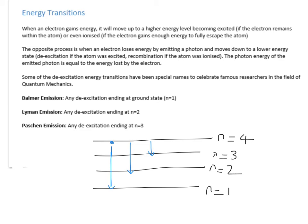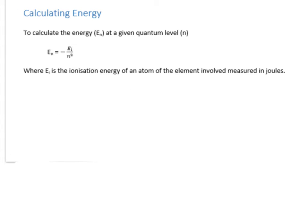Now let's look at how to calculate the energy at these given levels. There is a fairly simple equation: the energy at quantum level n equals negative EI divided by n squared, where EI is the ionization energy and n is the quantum number. It has a minus sign because all electron energies at these levels are negative. To understand why, and where the equation comes from, you would need to look into circular motion and Coulomb's law, which are covered in the A2 course.